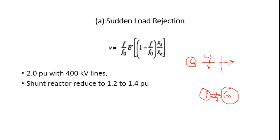But initially, both the frequency and the voltage are going to increase. The approximate voltage rise is given by the equation: V = (f / f₀) × E' × [1 − (f / f₀) × (Xs / Xc)], where Xs is the reactance of the generator — the summation of the transient reactance of both the generator and the transformers — and Xc is the capacitive reactance of the line at the increased frequency.